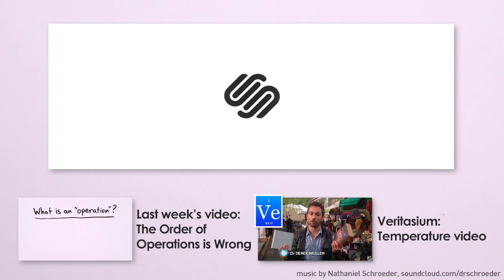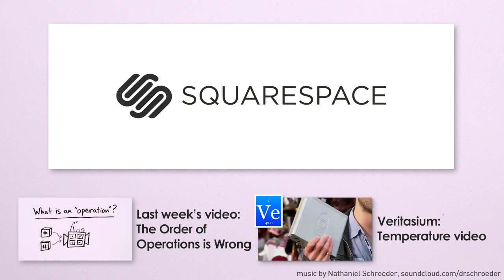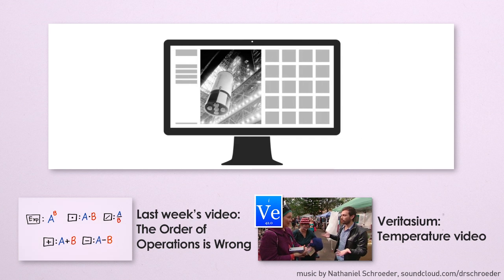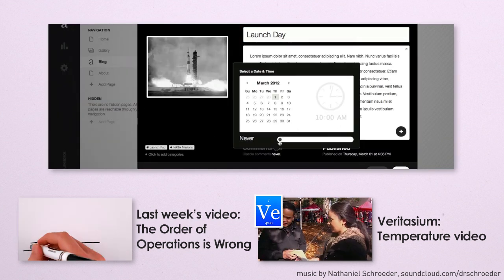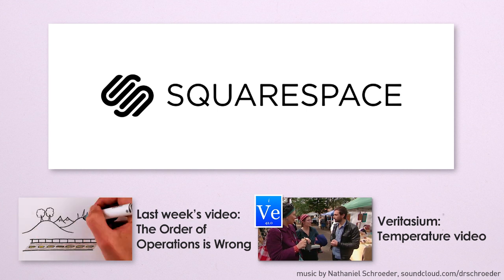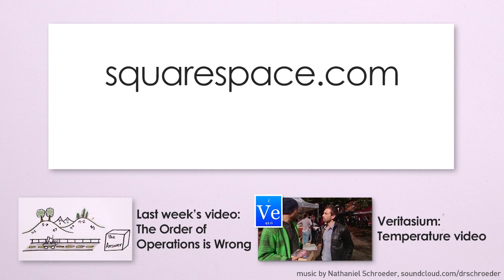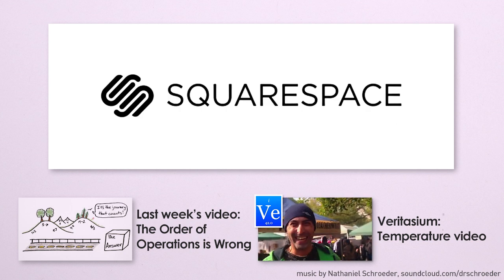This Minute Physics video was brought to you by Squarespace, the all-in-one platform that makes it fast and easy to create a professional website, blog, portfolio, or online store. Basically, they let robots do the robot work of building and managing your website, and leave the exciting and creative parts to you. For a free trial and 10% off your first purchase on new accounts, go to squarespace.com and use offer code MINUTEPHYSICS5. Again, thanks to Squarespace for supporting this episode of Minute Physics.